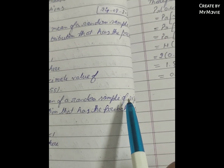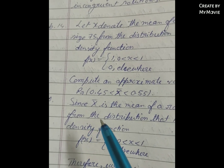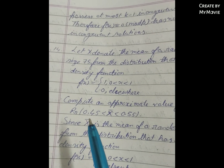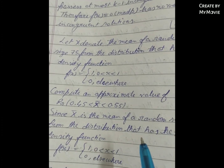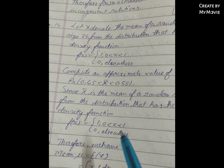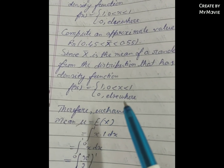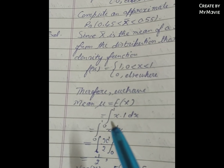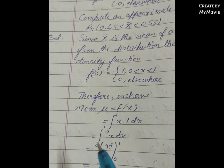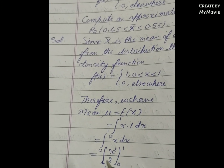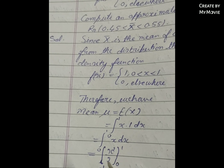Solution: x̄ is the mean of a random sample of size 75 from the distribution with probability density function f(x) equal to 1, where 0 less than x less than 1, and 0 elsewhere. Therefore, we have mean mu equal to E(x) equals the integral from 0 to 1 of x dx, which equals the integral from 0 to 1 of x into 1 dx.